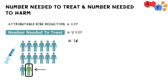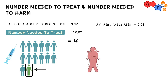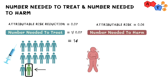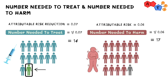With our example about gastroesophageal reflux disease, the attributable risk was 0.06. Therefore, our number needed to harm is going to be 1 over 0.06, which is roughly 16.7. But again, let's round it up to 17. The proper interpretation here would be that roughly 17 people would have to smoke in order to harm one additional person when compared to non-smokers.